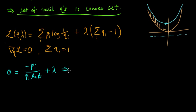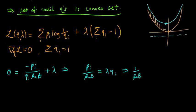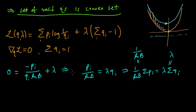Let's separate out lambda and use our constraint. We rearrange to get pi over ln(b) = lambda·qi. Now let's sum over all i's: one over ln(b) times the sum of pi equals lambda times the sum of qi. Using our constraint, the sum of the q's equals 1, and the sum of the pi's is always one. So this tells us that lambda equals 1 over ln(b).